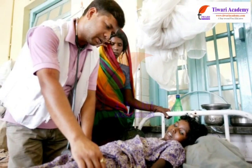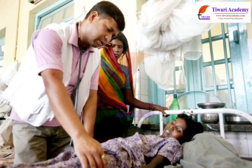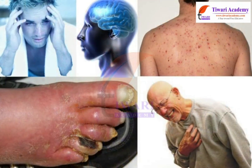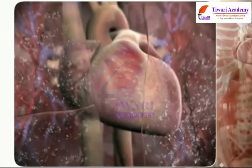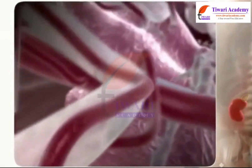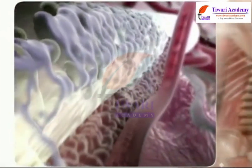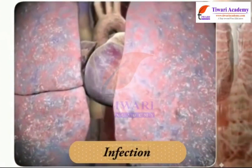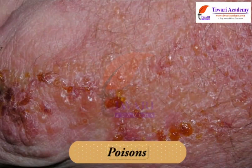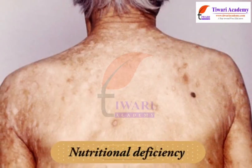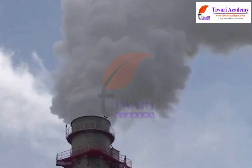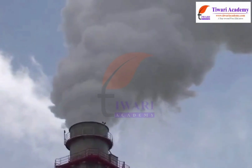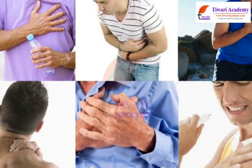When we are unhealthy, we are having one or more diseases. Scientifically, disease can be defined as a disordered or incorrectly functioning organ, part, structure or system of the body, resulting from the effect of genetic or developmental errors, infection, poisons, nutritional deficiency or imbalance, toxicity or unfavorable environmental factors — illness, sickness, ailment.